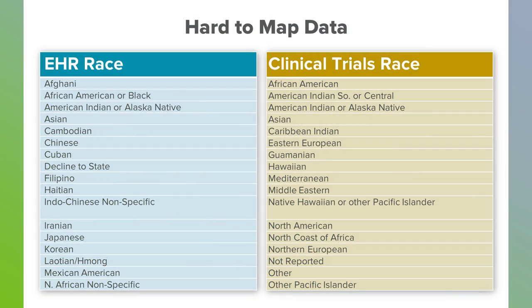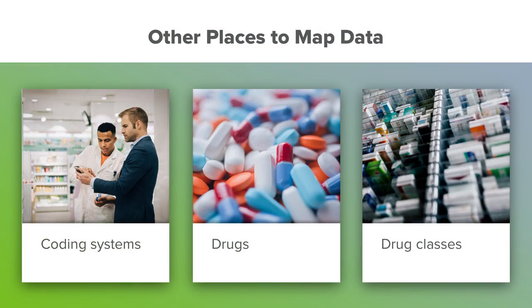Similarly, there are other mappings to consider. For race, the electronic health record has 25 categories and our clinical trial system has 28. Some of them are very similar and can be mapped directly. Other places where we map data are coding systems — sometimes we map between drugs and drug classes. If we're interested in something categorized as a heart drug, we can summarize all heart drugs into that category. This is particularly useful if you're doing an analysis on patients and want to know if they're being treated for heart disease, requiring a good mapping of all the drugs they might be on in the electronic health record.